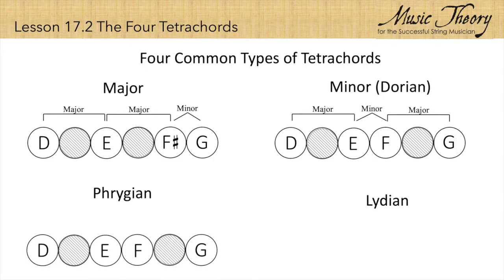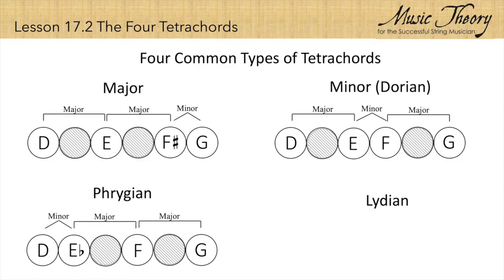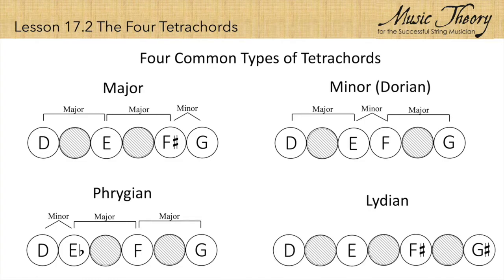In a Phrygian tetrachord, the second note is lowered a half step, so the new sequence is minor second, major second, and major second. A Lydian tetrachord is constructed with all major seconds — there are no minor seconds in a Lydian tetrachord.